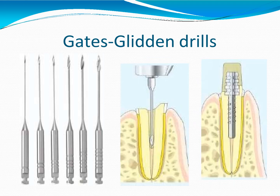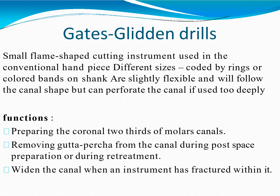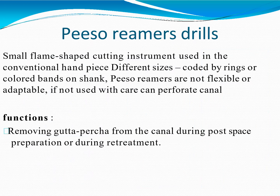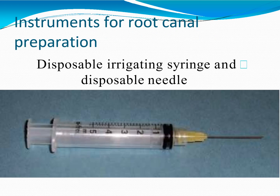NiTi rotary instrument use is best restricted to the relatively straight parts of the root canal to avoid strip perforation. They are recommended for use in a handpiece driven by an electric motor at 150 to 300 revolutions per minute. Gates Glidden drills are small flame-shaped cutting instruments used in the conventional handpiece; different sizes are coated by rings or colored bands on the shank. They are slightly flexible and will follow the canal shape but can perforate the canal if used too deeply. Functions include preparing the coronal two-thirds of molar canals, removing gutta-percha during post-space preparation or retreatment, and widening the canal when an instrument has fractured within. Pesso reamers are similar small flame-shaped instruments but are not flexible or adaptable; if not used with care, they can perforate the canal.